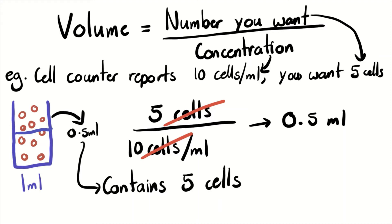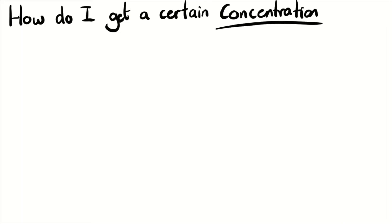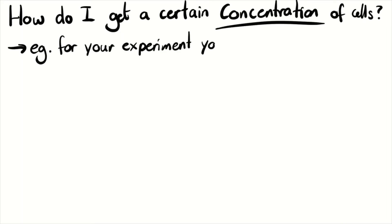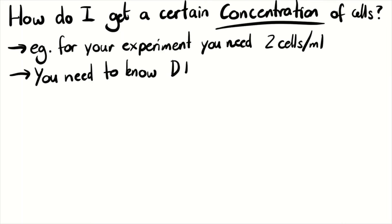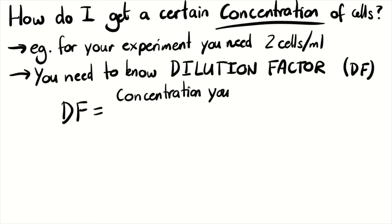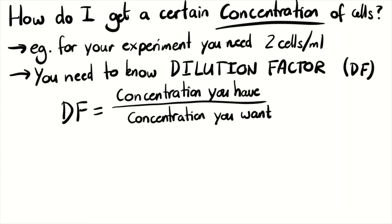Another common calculation is how do you get a certain concentration of cells? If your experiment needs 2 cells per mil, quite often this will require diluting your cell suspension to get the concentration you want. For this, you need to know the dilution factor, which is equal to the concentration you have divided by the concentration you want.